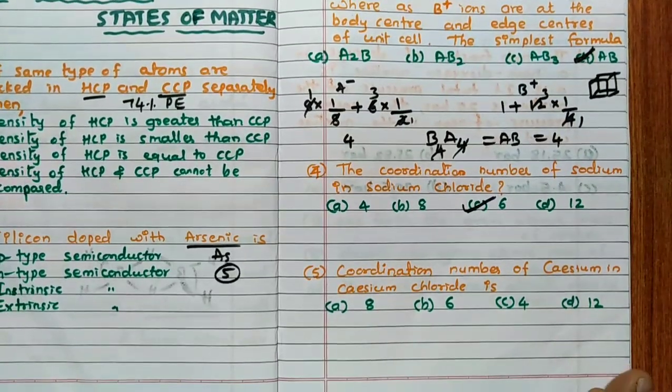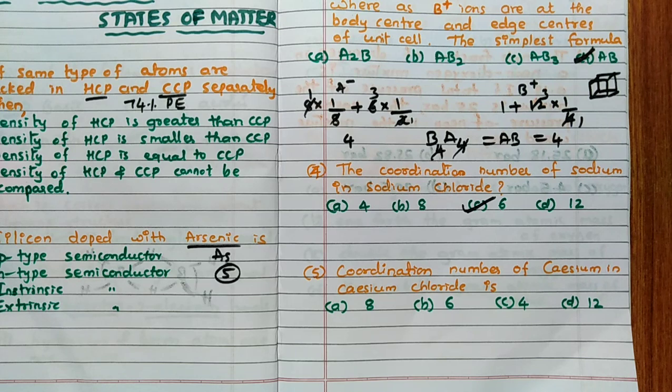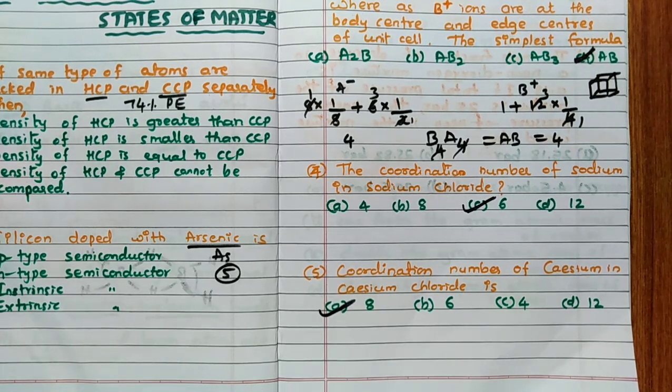Coordination number of cesium in cesium chloride - remember cesium in cesium chloride also, this is a famous structure for BCC, body-centered cubic structure. So answer for this question is 8, because in BCC coordination number is 8.